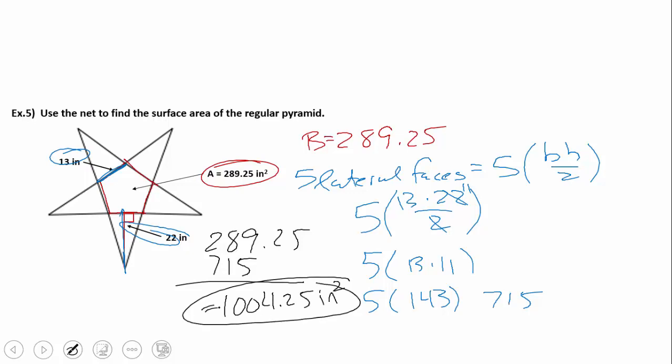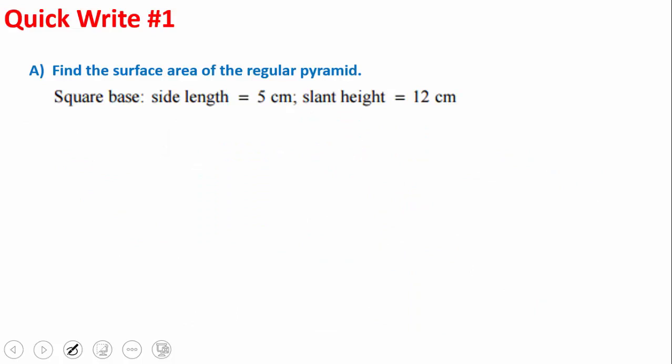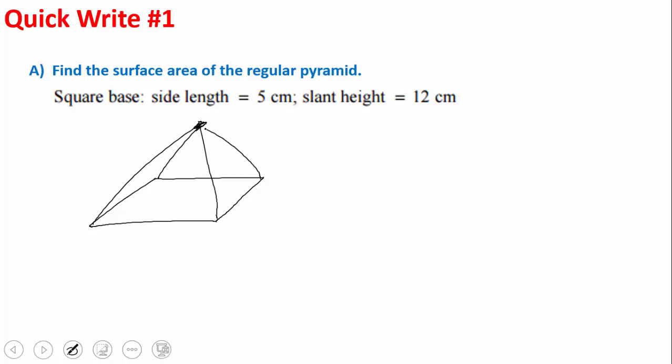Now you have a quick practice problem: find the surface area of a regular pyramid with a square base, side length of 5, and slant height of 12. If you don't know how to draw it, make that parallelogram shape, put the vertex up in the sky, and connect the four base vertices to it. Label the side length 5 and slant height 12. Take a quick break, and then come back to finish it up.